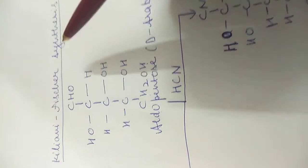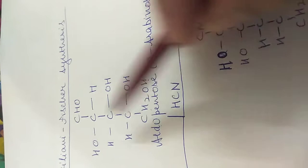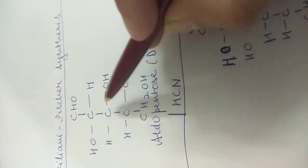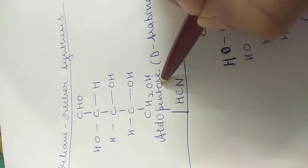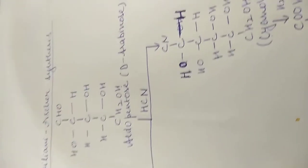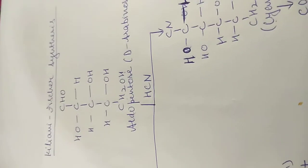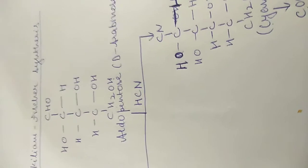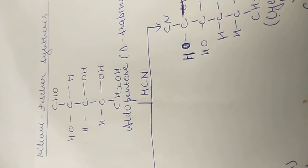In the Kiliani-Fisher synthesis, we have taken aldopentose D-arabinose: CHO, COOH, CHOH, CHOH, CH2OH. In this synthesis, we will get a mixture of two stereoisomers. Both those compounds will be stereoisomers — they will be epimers at one of the carbons, meaning there will be a change in the configuration of the substituents.